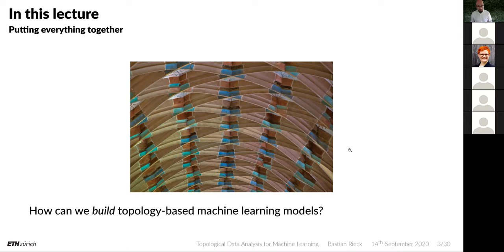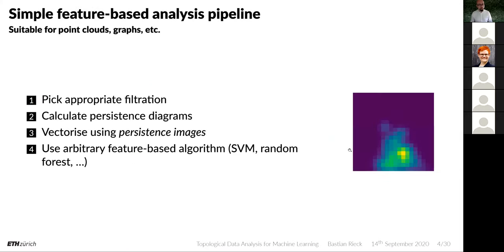How can we actually build topology-based machine learning methods, and how do those models perform in practice? The simple feature-based analysis pipeline works for point clouds, graphs, or whatever — whenever you can pick an appropriate filtration. It might be based on vertex degree or distances. You calculate your persistence diagrams, vectorize them using persistence images, and then use an arbitrary feature-based algorithm such as an SVM or random forest.